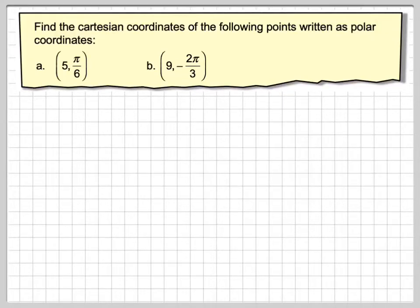Hi, in this video we're going to convert polar coordinates into Cartesian coordinates. Find the Cartesian coordinates of the following points written as polar coordinates. This first one is 5 pi by 6 and the second one is 9 minus 2 pi by 3.